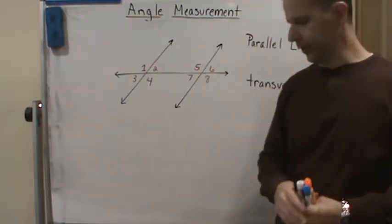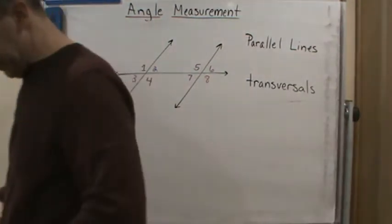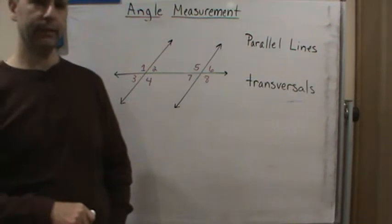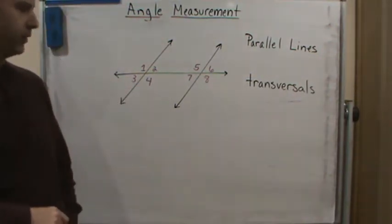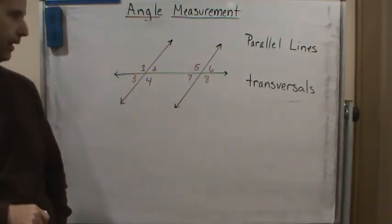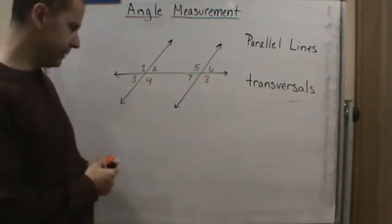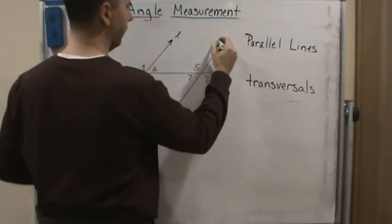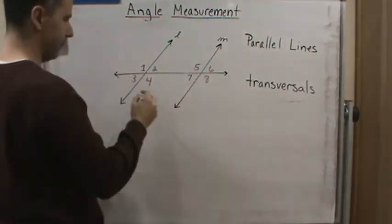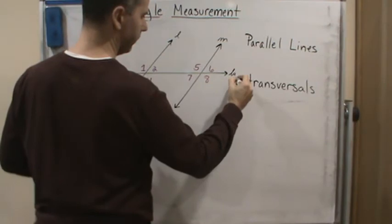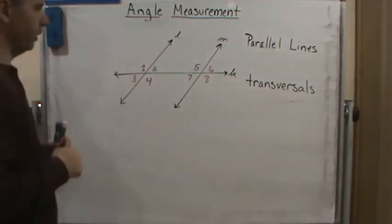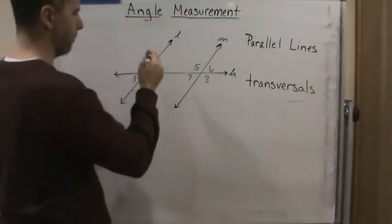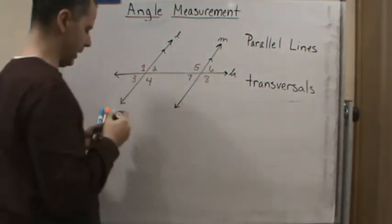Welcome back. Now we're going to talk about a couple of other characteristics of lines and angles. This has to do with parallel lines that are also cut by another line — a third line. In this case, we have two lines. Let's call them line L and M, and then this can be K. We're going to say that line L and M are parallel lines.